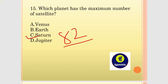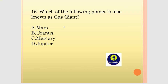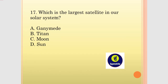Jupiter has 79 satellites. Saturn is also well-known. A famous satellite is Titan — Titan is a satellite of which planet? Titan is a satellite of Saturn. Which of the following planets is also known as a gas giant? The answer is Jupiter. The largest satellite in our solar system is Ganymede, which is a satellite of Jupiter.